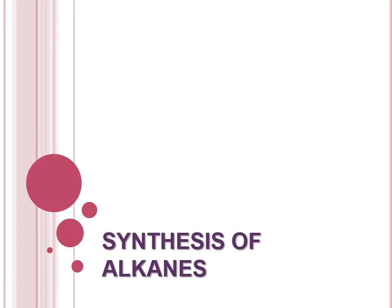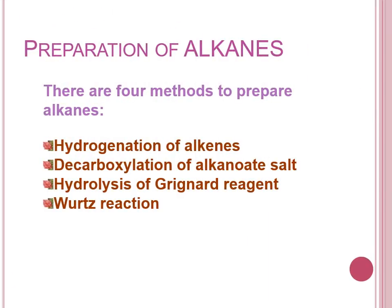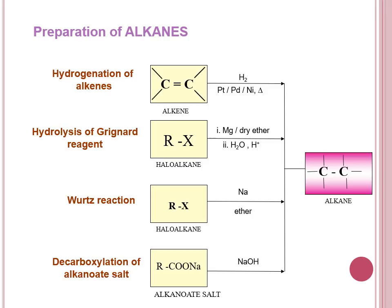We are going to look at the preparation of alkanes. There are four methods: hydrogenation of alkenes, decarboxylation of alkanoate salt, hydrolysis of Grignard reagent, and Wurtz reaction. This mind map shows all four reactions, which you can write on page 213. The first reaction uses an alkene as a reactant, hydrogen gas as a reagent, with a catalyst of platinum, palladium, or nickel and heat. It will produce an alkane.